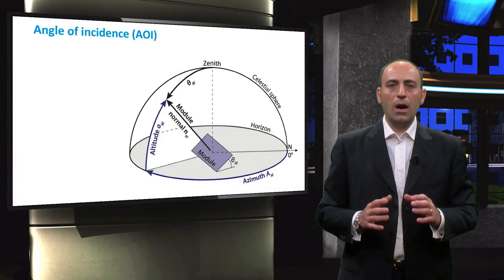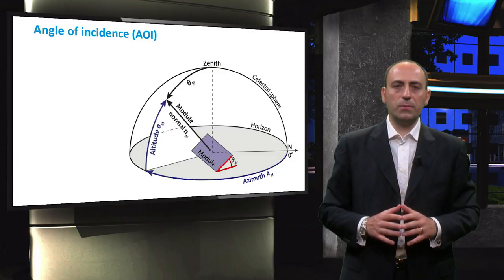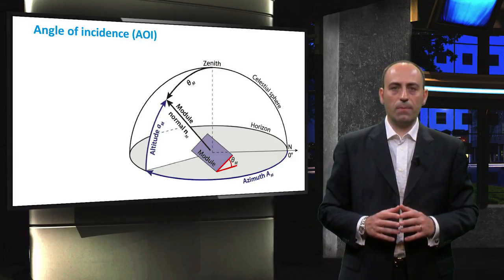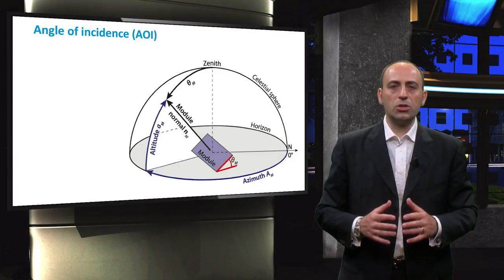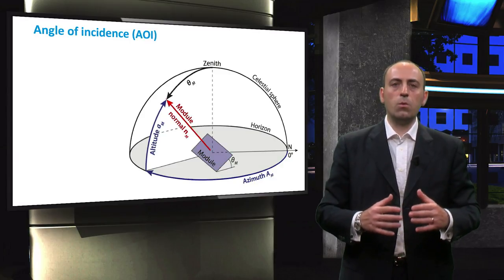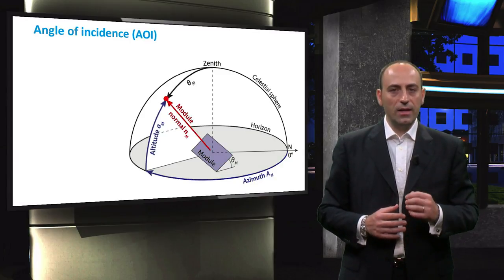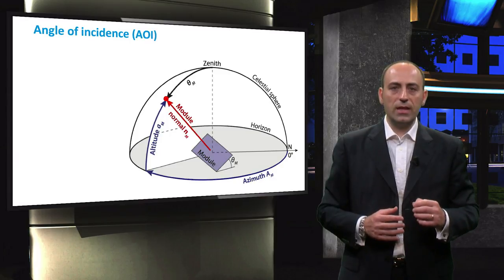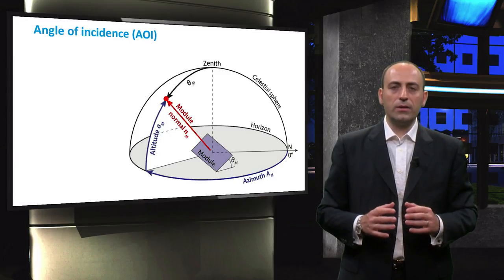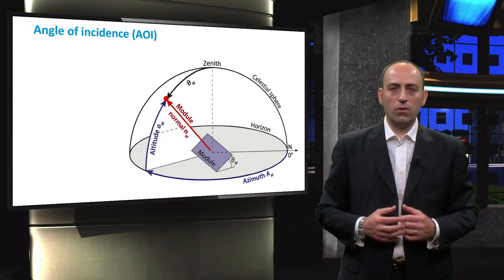In this picture, our PV module is tilted with respect to the ground at an angle theta m. Here we can describe the position of the module according to its normal vector, which is the one highlighted in red, that identifies a point in the celestial sphere. This point can be located in the horizontal coordinate system, by means of two coordinates.